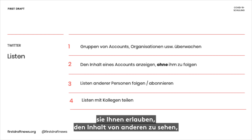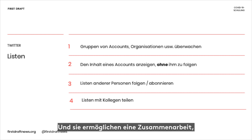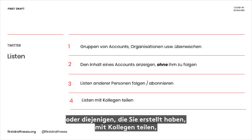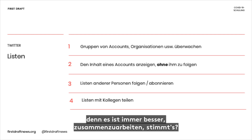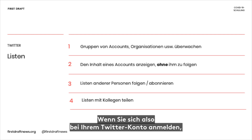Another cool feature about Twitter lists is that they let you see someone's content — what they're tweeting about — without having to follow them. They're also collaborative, so you can follow other people's lists or share the ones you've made with colleagues, because it's always better when we work together. Let's have a look at how they work.